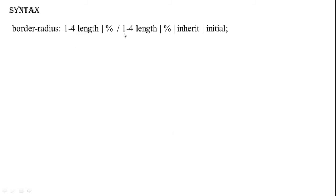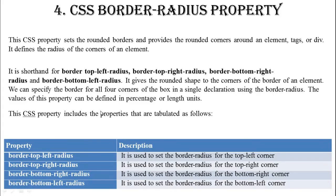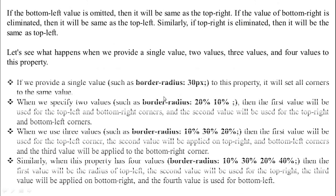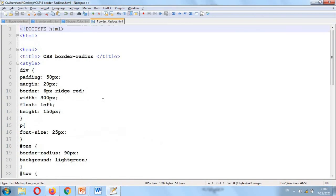The syntax for border-radius: the property value defines the shape of the corner using a length value. Its default value is zero and it does not allow negative values. You can mention the value in percentage or in length units, as we discussed earlier.